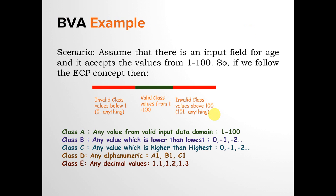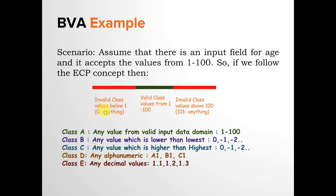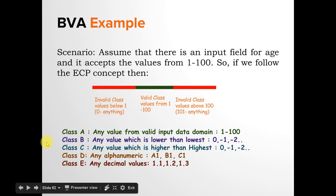Let's see it by an example. The scenario is: assume there is an input field for age that accepts values from 1 to 100. Following the ECP concept, there will be a valid class of data — you can pick any value from 1 to 100. In another class, an invalid class, you pick a value lower than the lowest valid value, which is 1. So you can pick 0, -1, -2, -3, or anything below.